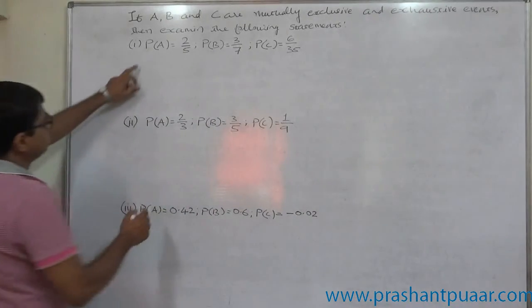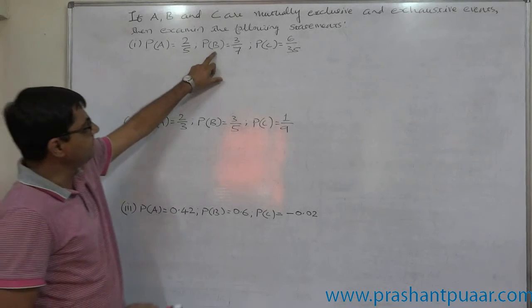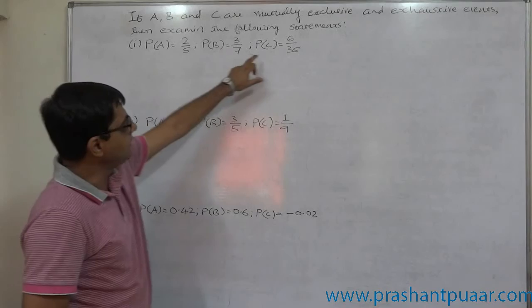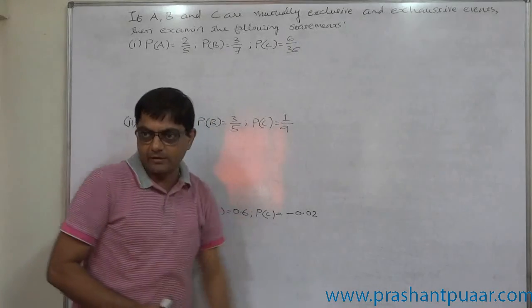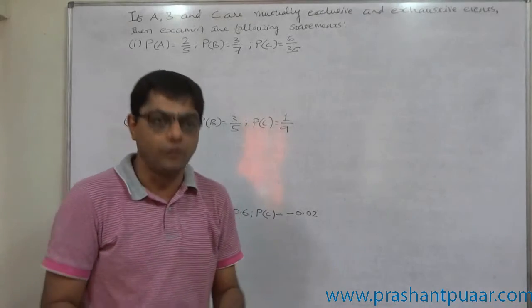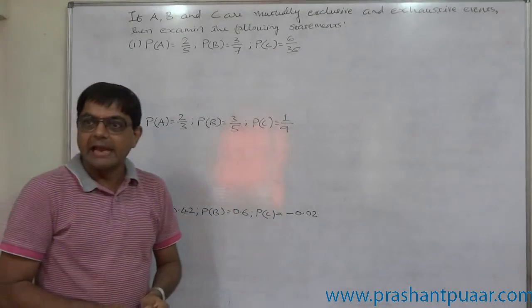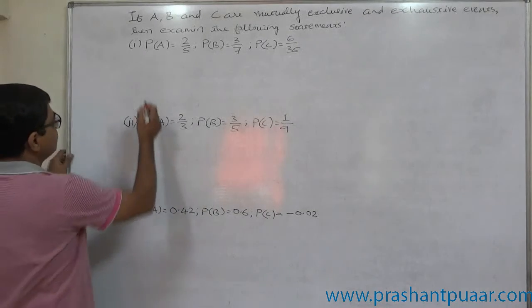Now the first statement given is P of A equals two by five, P of B equals three by seven and P of C equals six by 35. We require to check whether this statement is true or false. For this purpose, we have to add the probabilities of all these three.